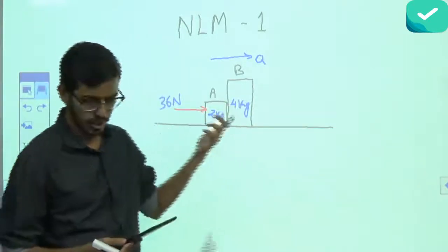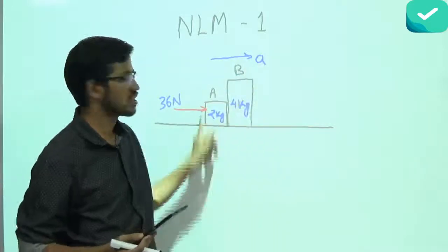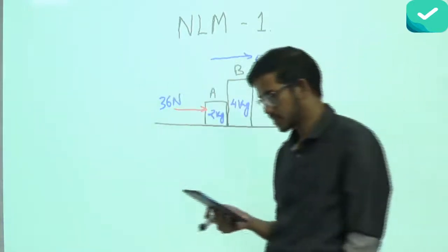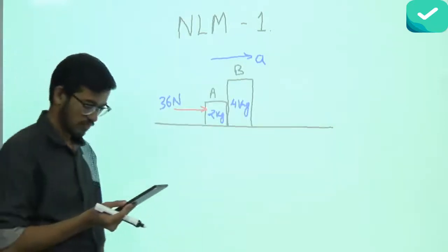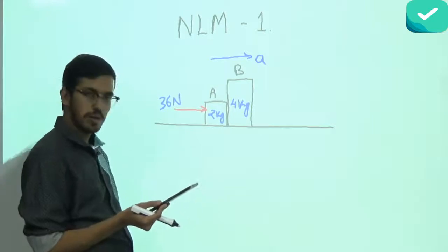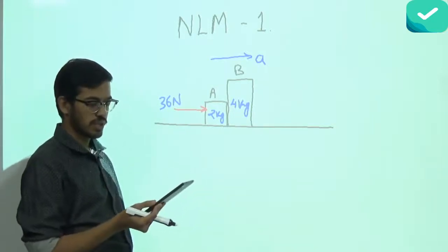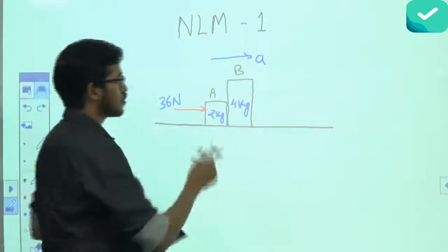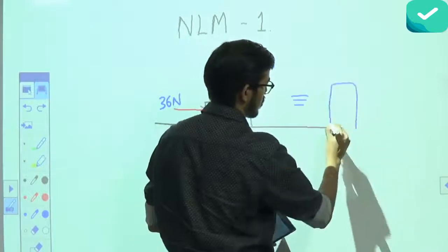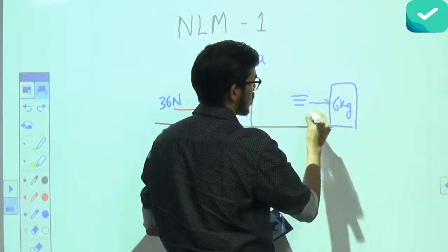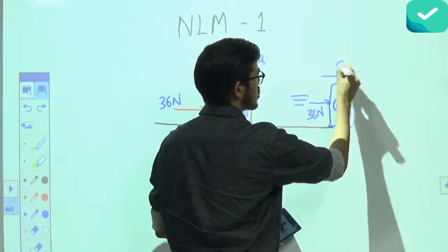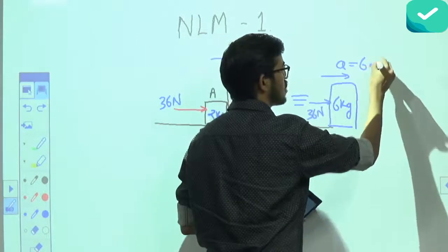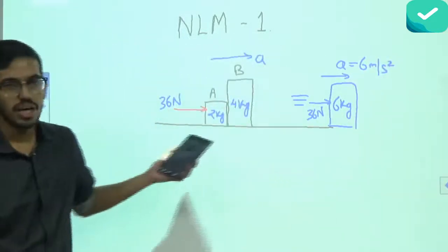Can we find that common acceleration? Imagine the system as a single 6 kg block with 36 N applied. Acceleration is force by mass: 36 divided by 6 equals 6 meters per second squared. So common acceleration is 6 m/s². Block A has acceleration because a force is applied on it — that's clear. But my question is: who moved block B? How did B get this acceleration? I applied no force on B directly.